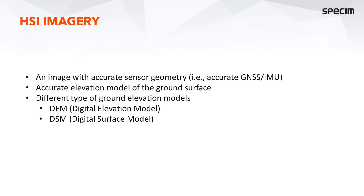You also need an accurate elevation model of the ground surface. Different types of ground elevation models include, for example, the digital elevation model (DEM), which represents bare earth elevations, and the DSM, which is the digital surface model, including the first surface elevations. This typically comes from LiDAR, which we'll discuss more on the coming slides.